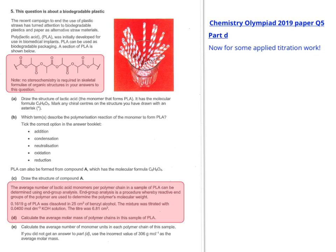So this next section gives you some data, and you're to calculate the average molar mass of polymer chains in this sample of PLA. So the way that they do this is they look at what's called end-group analysis, which is a procedure where reactive end-groups of the polymer are used to determine the polymer's molecular weight, or what we might refer to it in A-level as a molar mass.